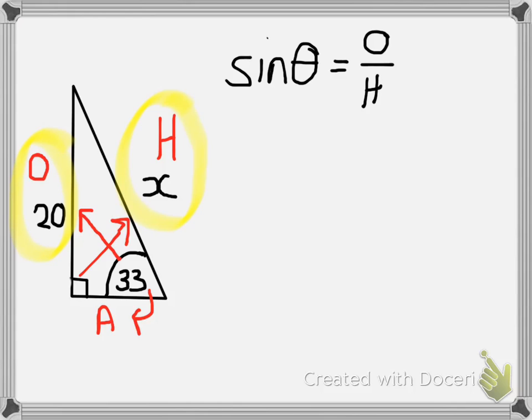Now let's substitute into this equation the information that we know. We know that θ is 33 degrees, we know that our opposite is 20, and we've been given our hypotenuse as x length.